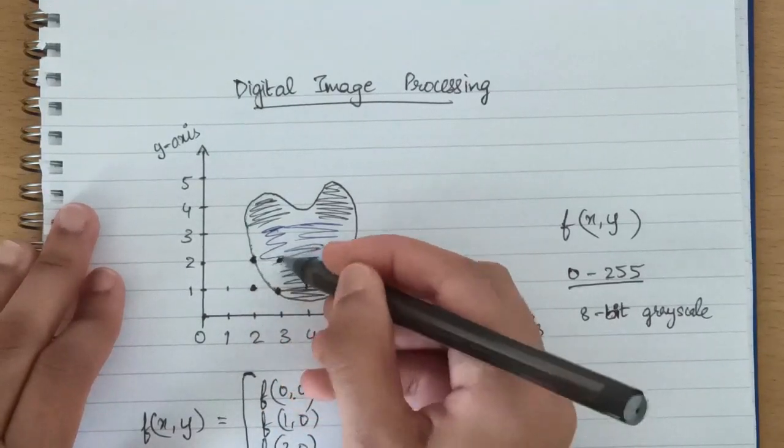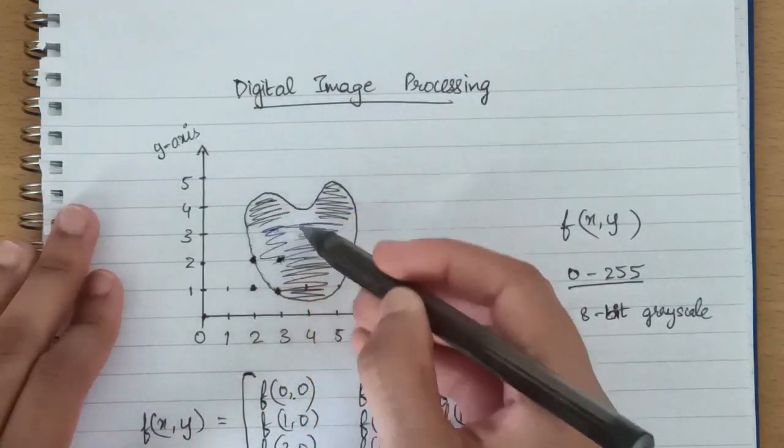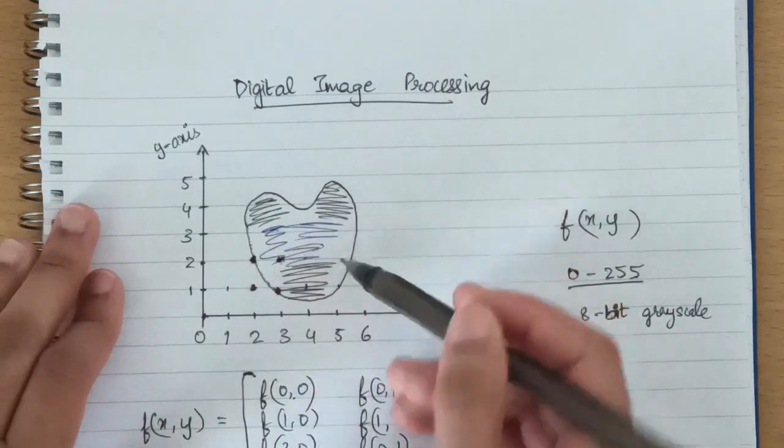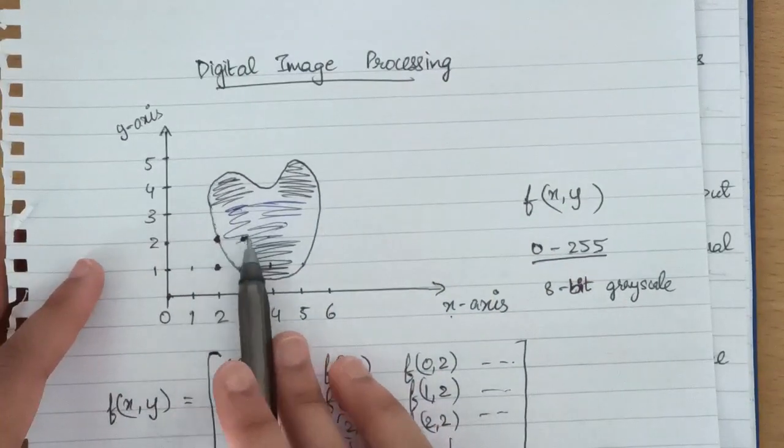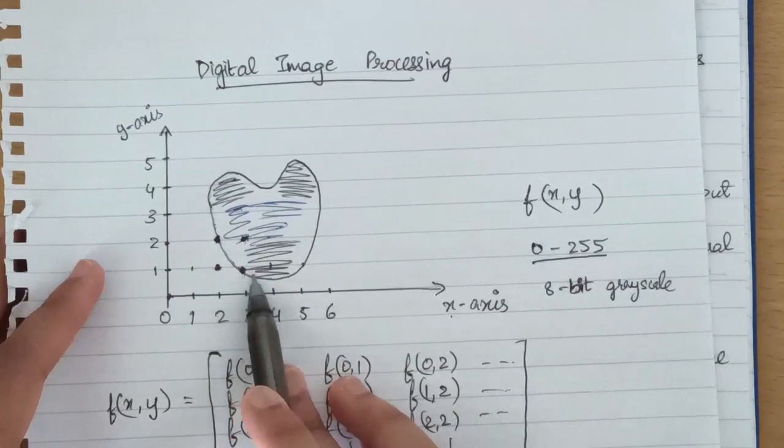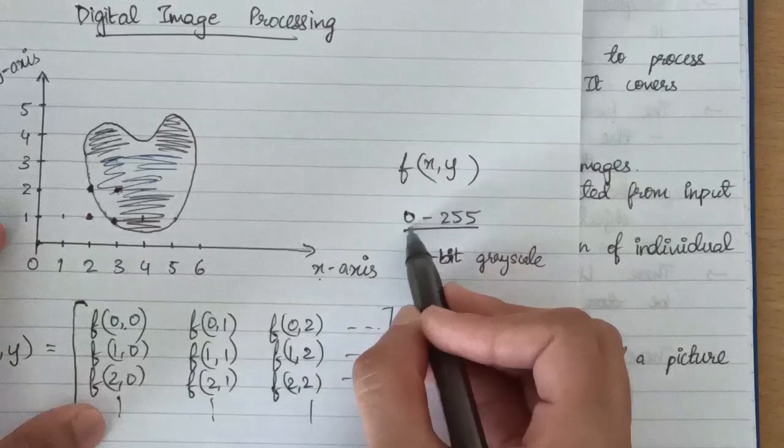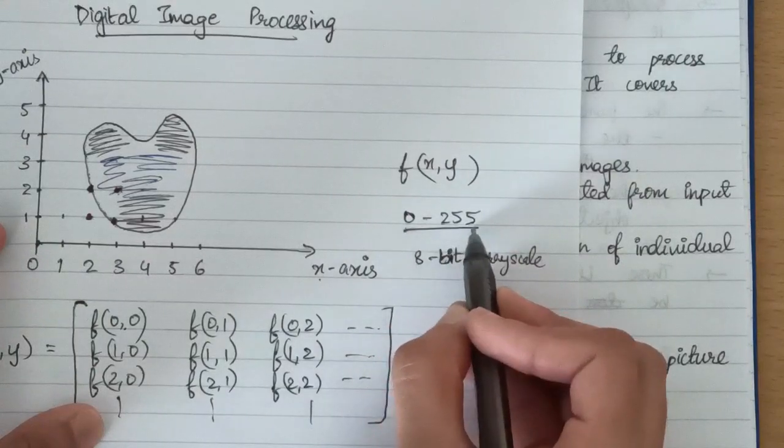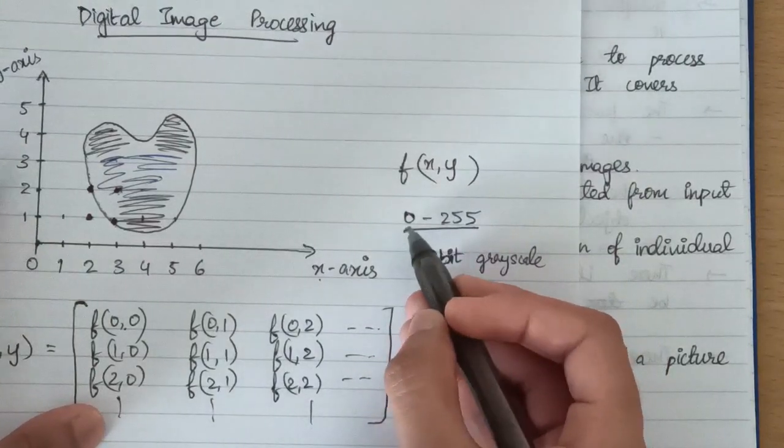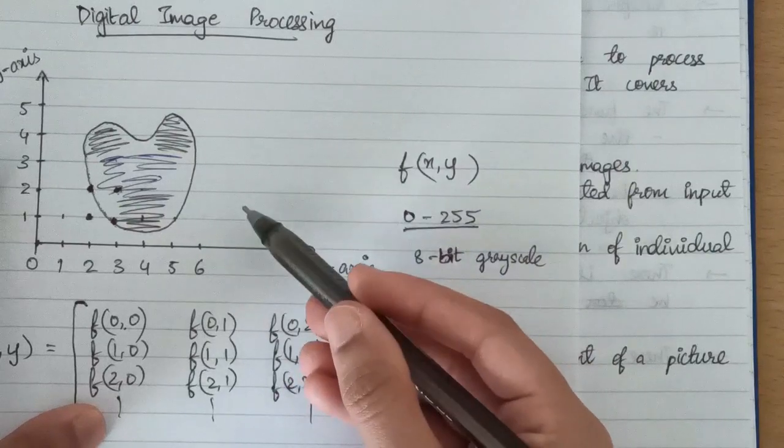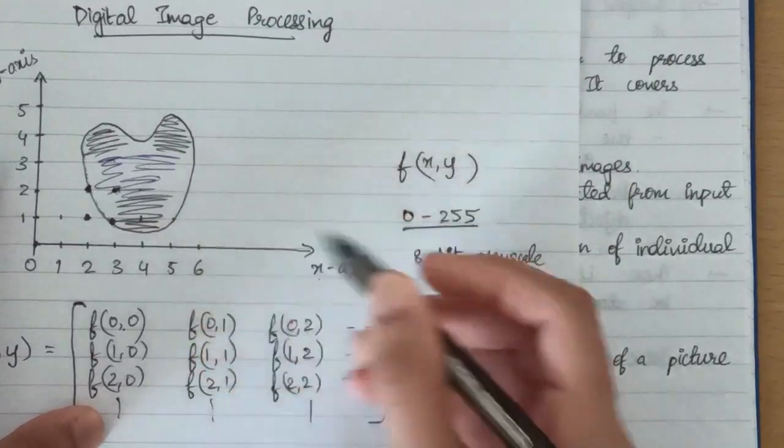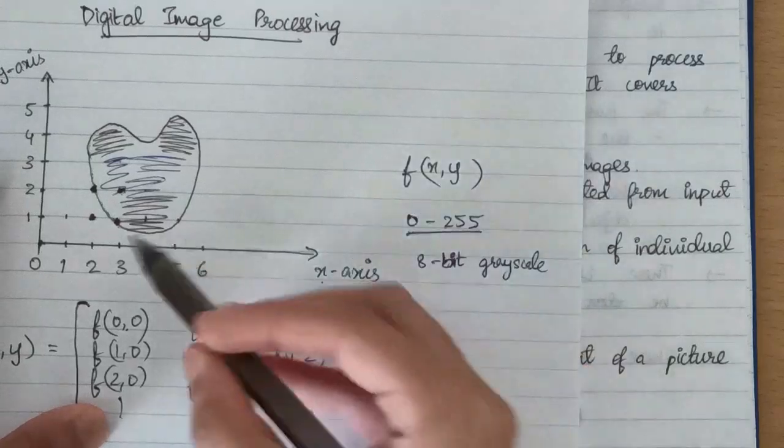It is the building block of an image. With the help of these pixels, this entire image can be created and these pixels have certain intensity values. If we have an 8-bit grayscale image, then these values range from 0 to 255 where 0 will represent lesser intensity or 0 value and 255 will represent highest intensity.